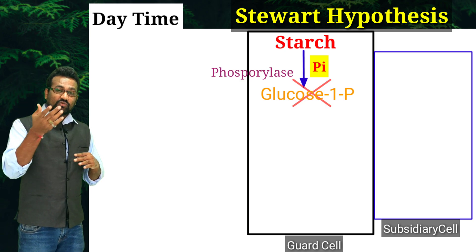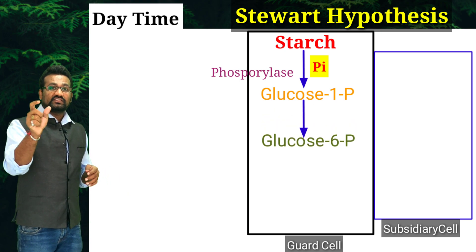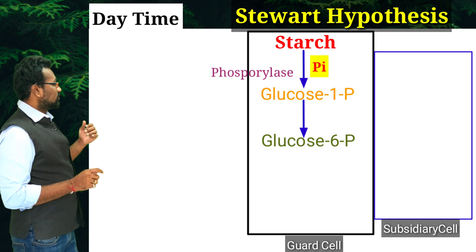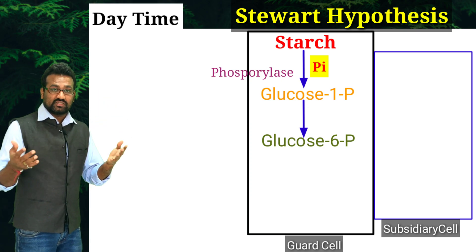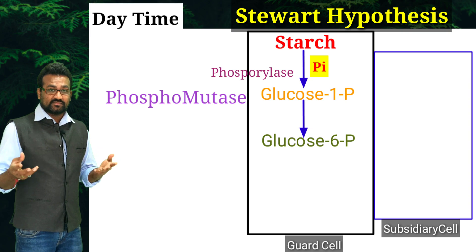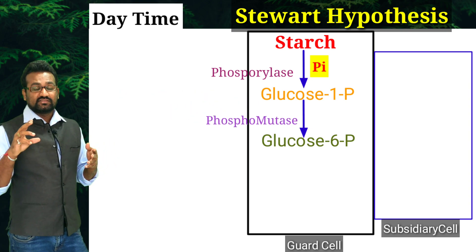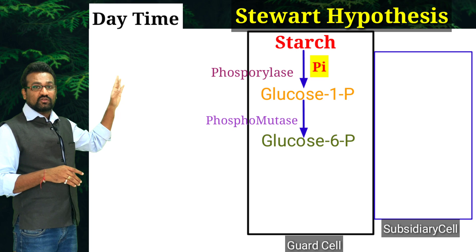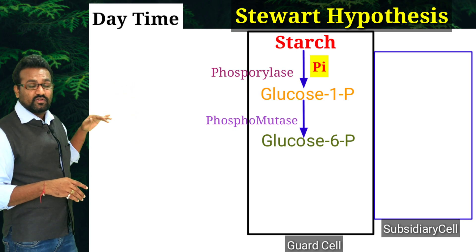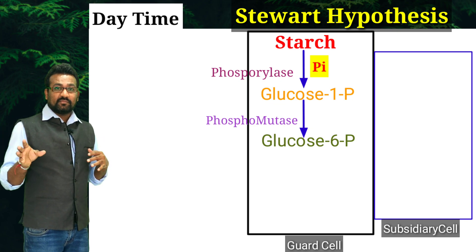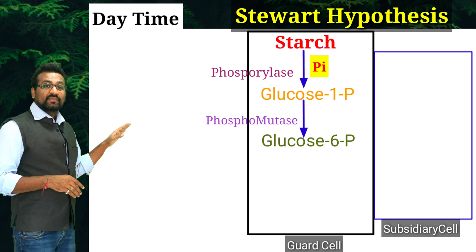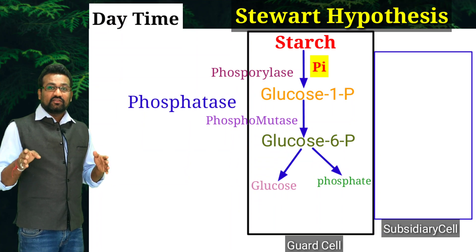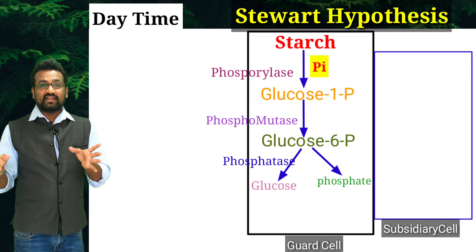To use it, glucose-1-phosphate has to be converted into glucose-6-phosphate. The inorganic phosphate present on the first carbon of glucose needs to be shifted to the sixth carbon. So glucose-6-phosphate is produced by the enzyme phosphomutase. Mutase-category enzymes generally perform the transfer of a group from one atom to another. This glucose-6-phosphate then needs to be cleaved into two different molecules by phosphatase enzyme activity, yielding separate glucose and inorganic phosphate.